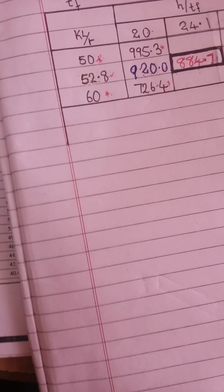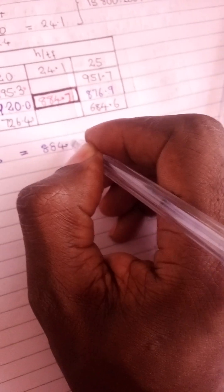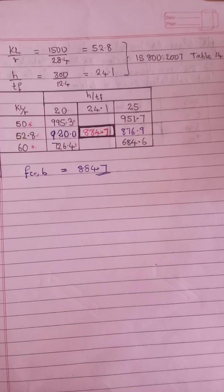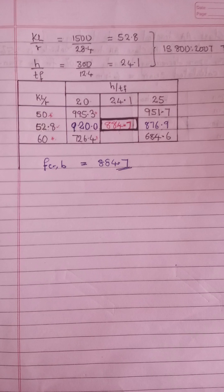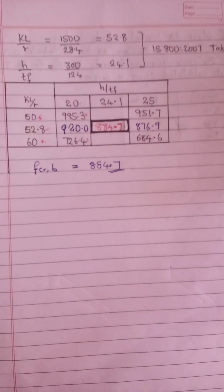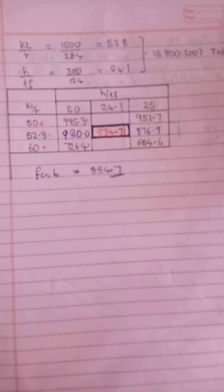From my calculation I can now conclude that my F_CLB for these section properties is 884.7. I can now proceed with the rest of my calculation. Thank you for watching — I hope this video is beneficial to you. Please subscribe to the channel; it's free. Thank you so much, bye.